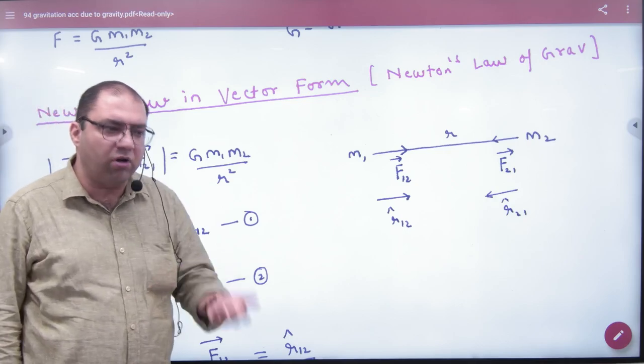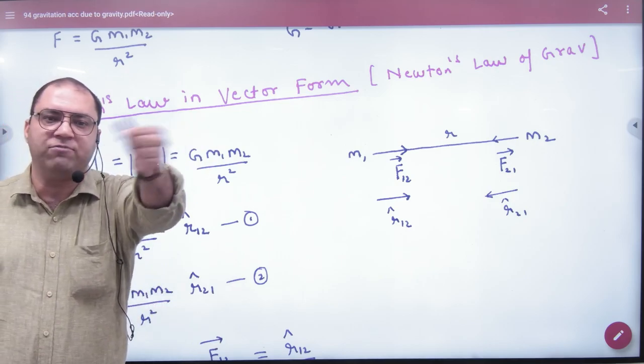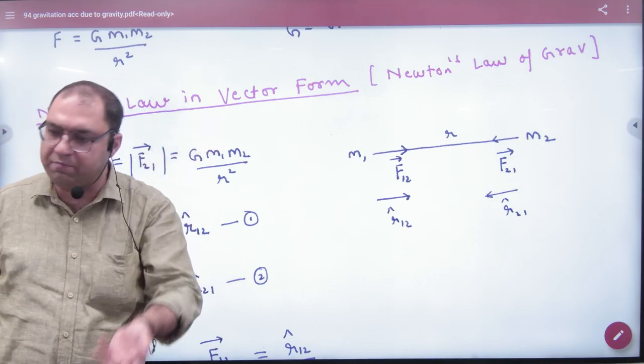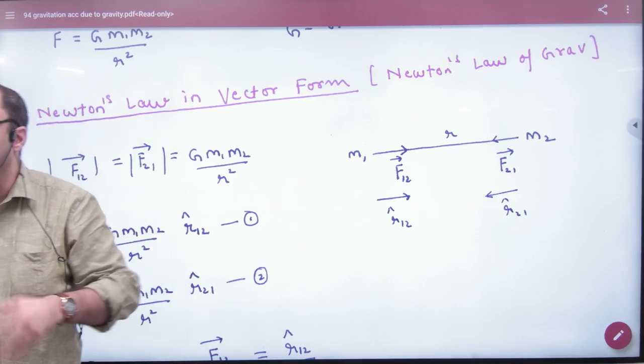To write it in the vector form, normally you put under force's magnitude i-cap, j-cap, k-cap, so you become vector form, simple. But you need to know that force will be in x-axis, y-axis, or z-axis.